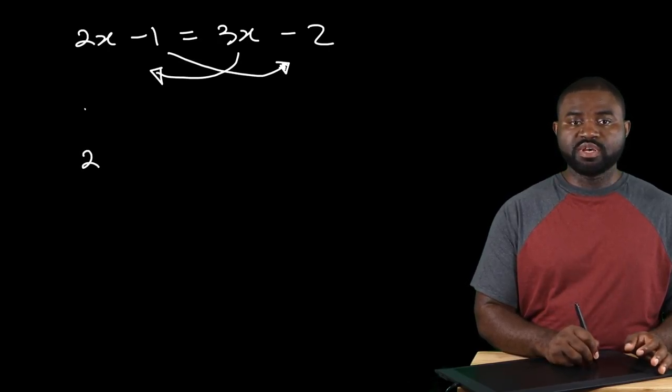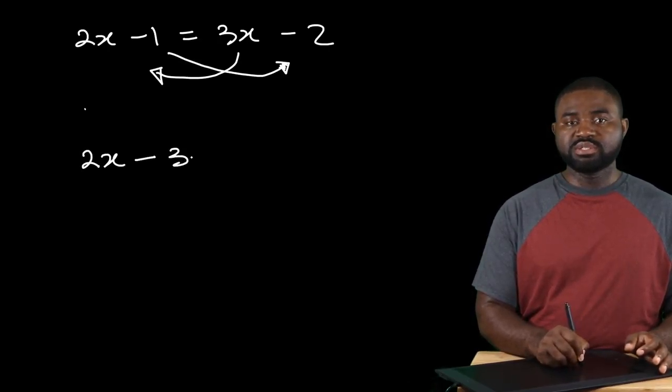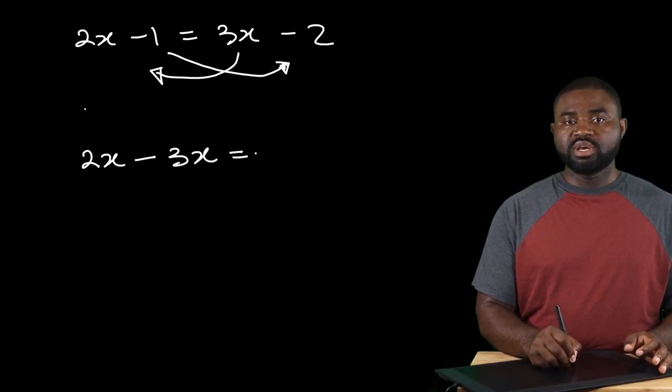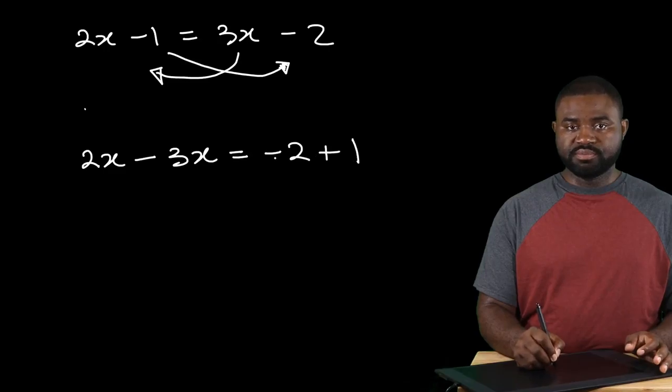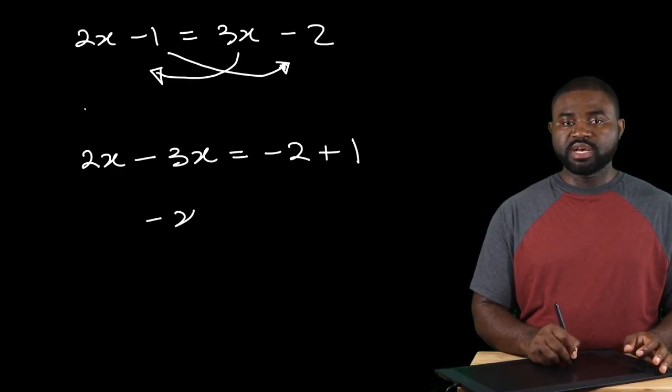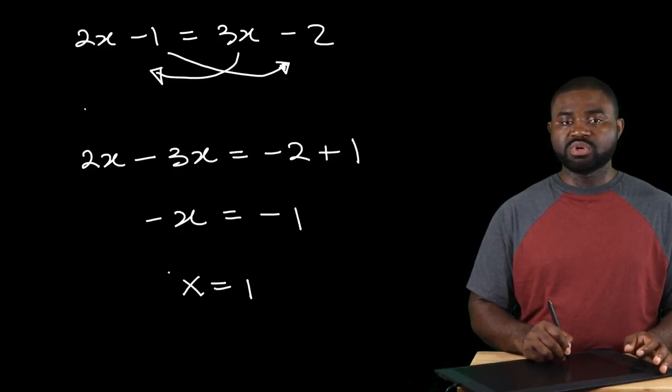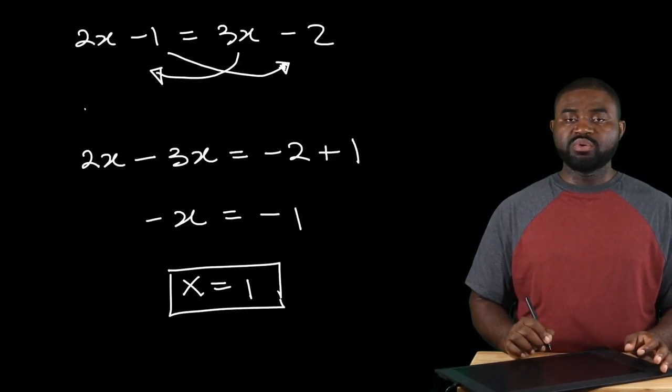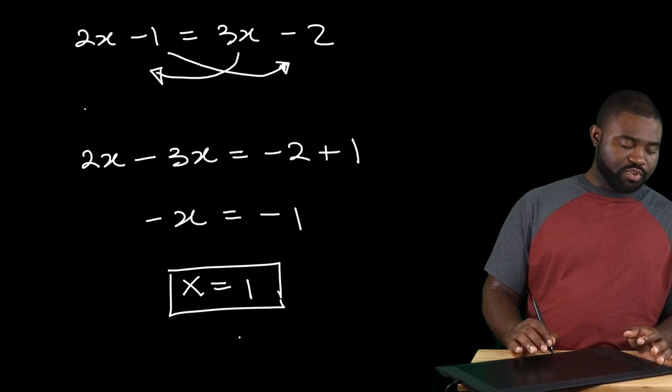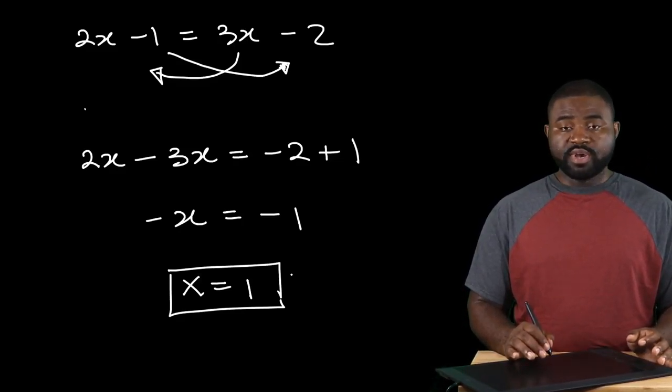So we're going to have 2x minus 3x equal to negative 2 plus 1. So we have minus x, all of this equal to minus 1. And if you divide or multiply both sides by negative 1, you will end up with x being equal to 1. And we have simplified our expression.